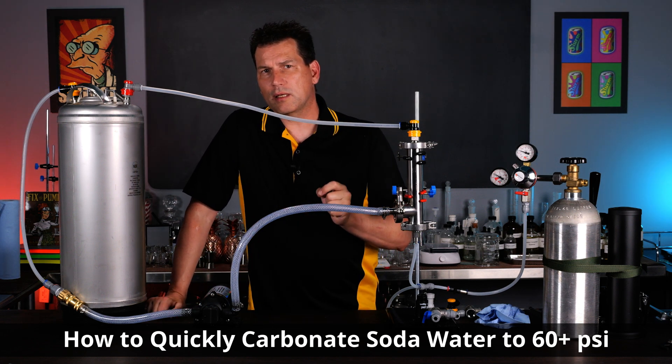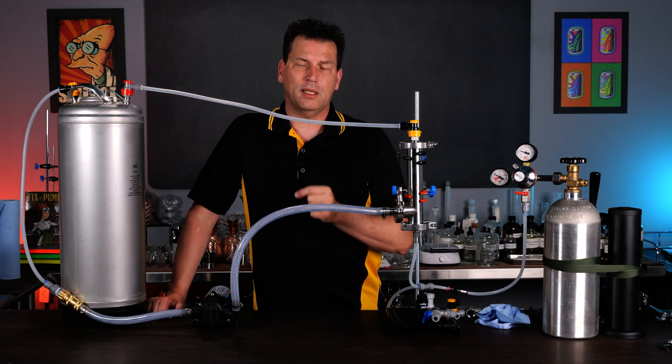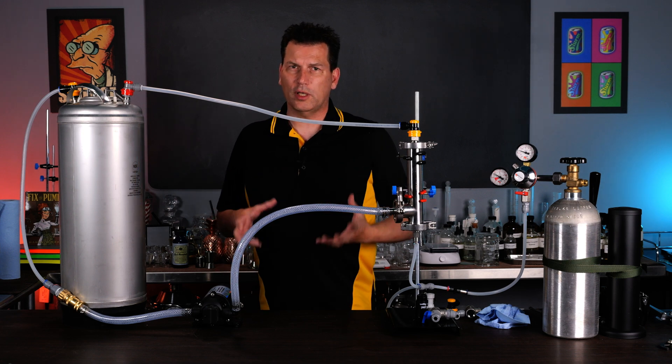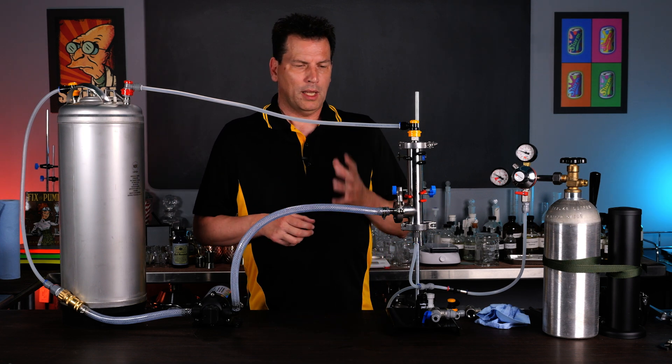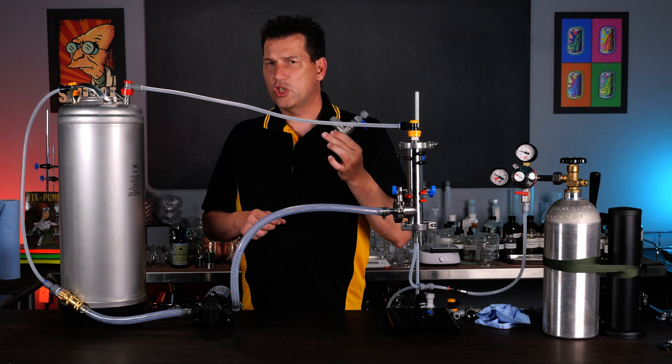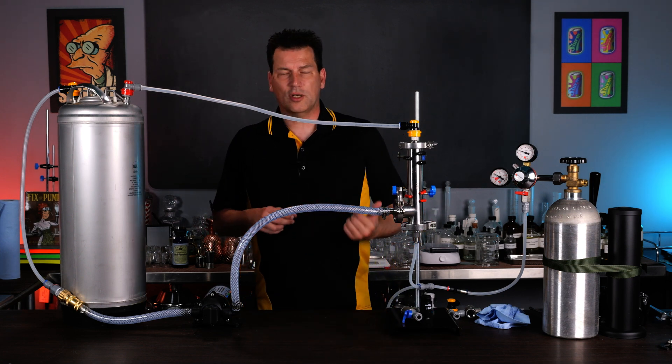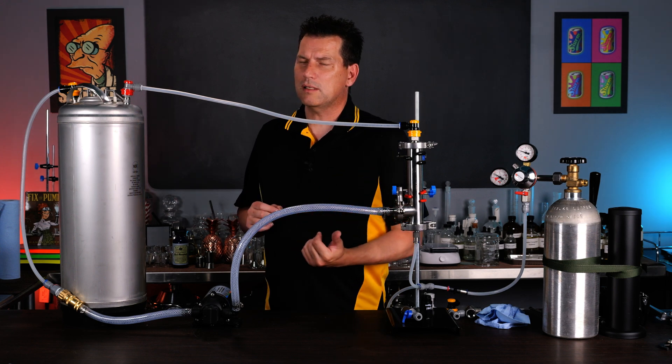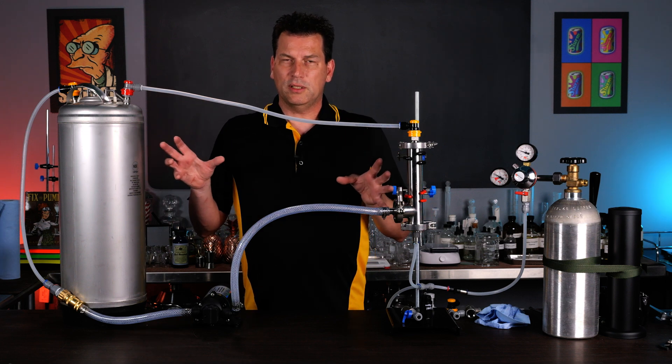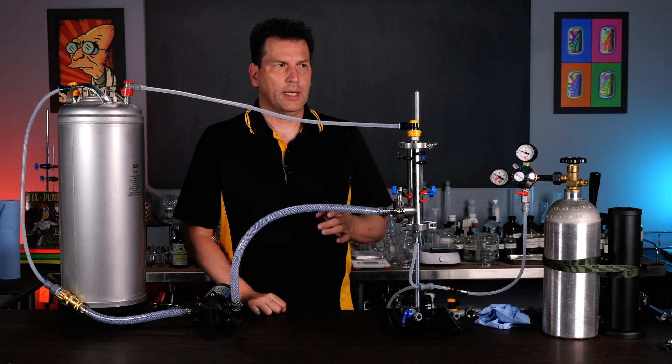This contraption you're looking at is designed to quick carbonate soda water up to 60 to 90 psi in a half an hour. If you've ever brewed beer and you've tried to carbonate stuff, you know that it takes a long time. Yes, you can buy quick carbonators but they're only good up to like generally 30 psi. Because we're looking at the old history of the soda fountain where they used to carbonate things up to 150 psi, I'm really curious what happens when we get to that level. So this is the build I've done. Let's talk about it and I'll explain how it works. I'm Darcy O'Neill and this is Art of Drink.